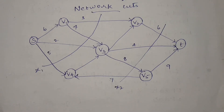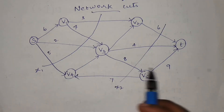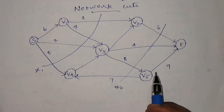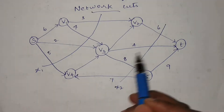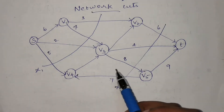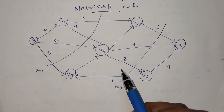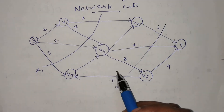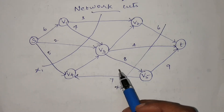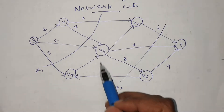Hello everyone. In this video we're going to discuss network cuts. In an SD graph (source-target graph) we may get any number of cuts, and if cuts fall on different edges in the graph we call it a network cut. We are going to discuss how to calculate the capacity value of these cuts.